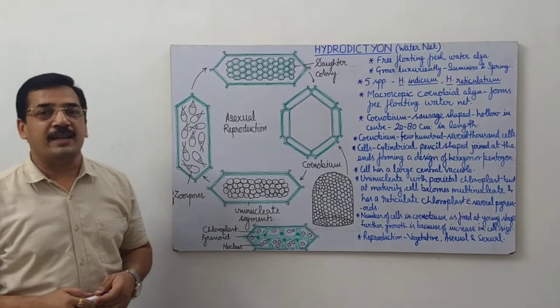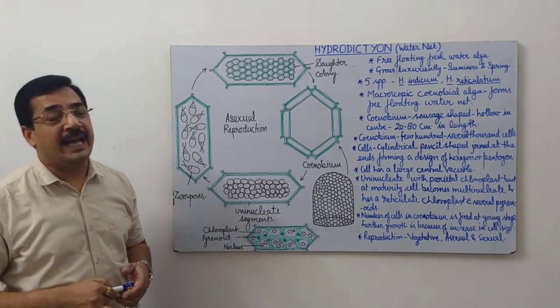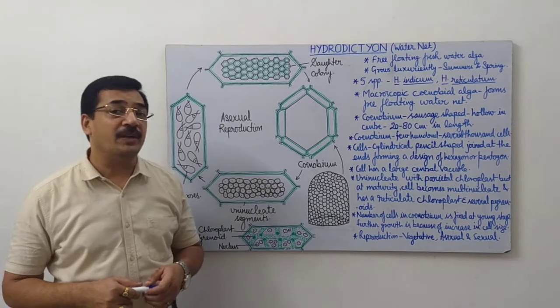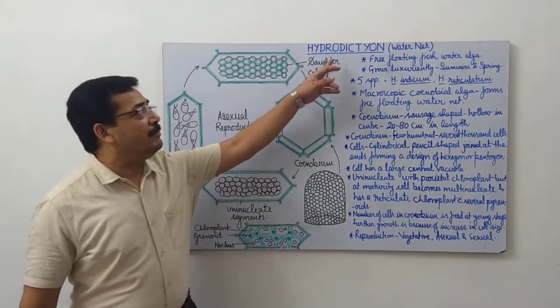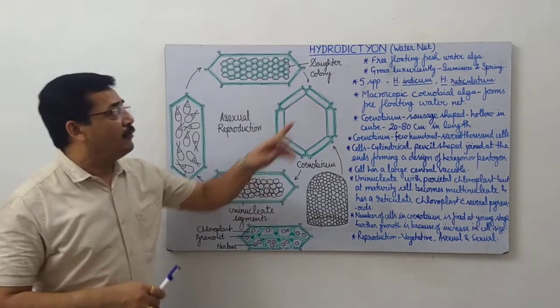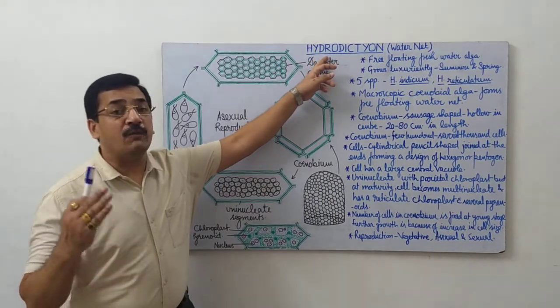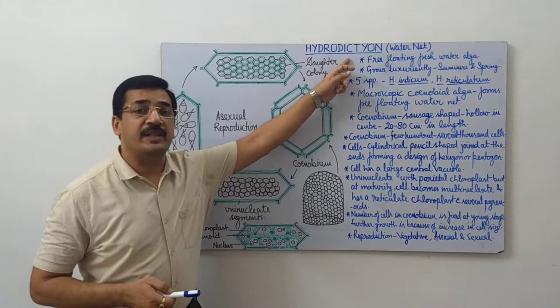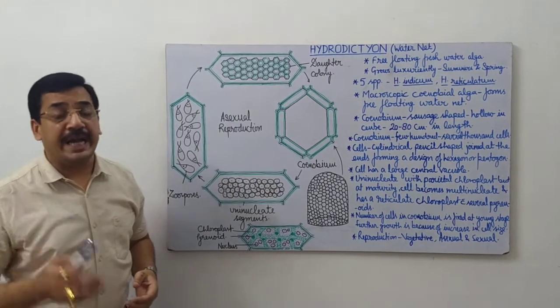Today we are going to discuss another green alga, and that is Hydrodictyon. The term Hydrodictyon is made of two words: hydro meaning water and dictyon meaning net.